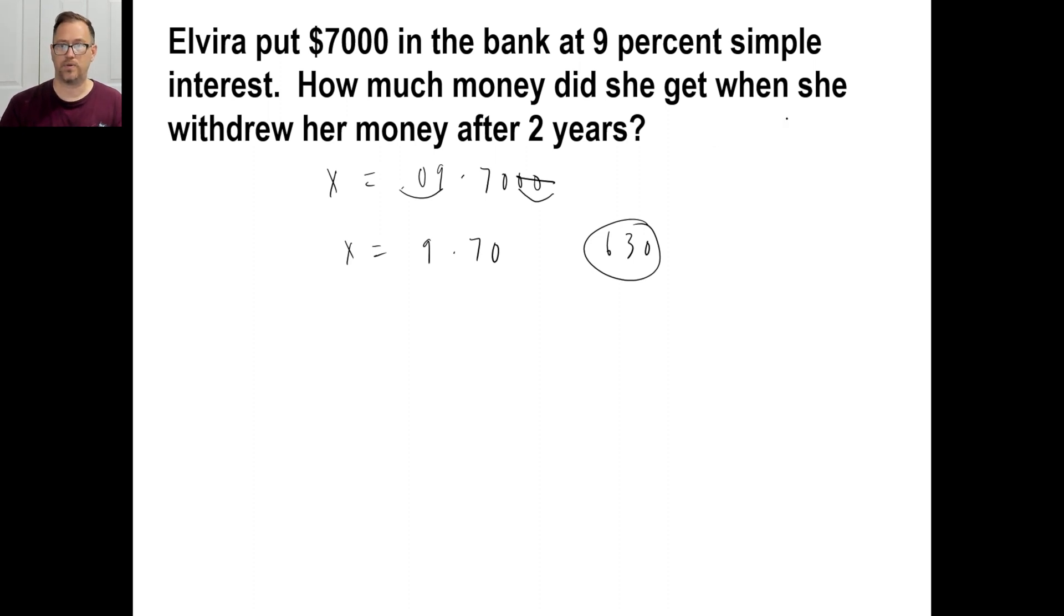Now it's simple interest. So that's what she's going to be making every year. Okay. So what we would do is we would say it's $7,000, you know, plus 630 plus another 630. That'll give us $8,260. Okay. Keep that thing in your head. All right. All right. Go ahead and pause it and try B.